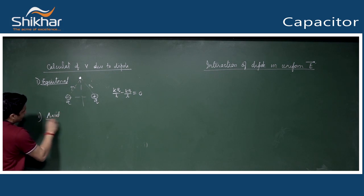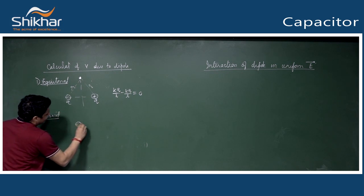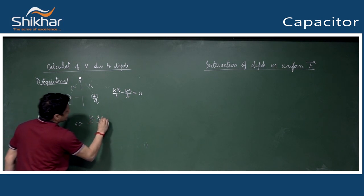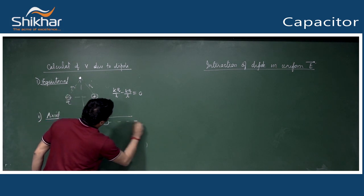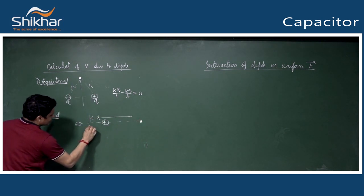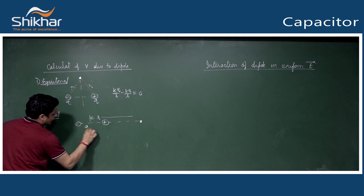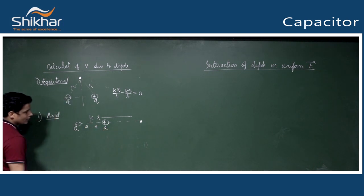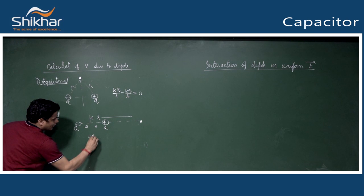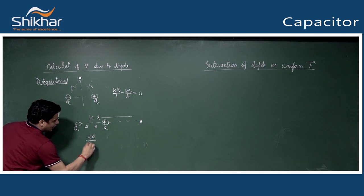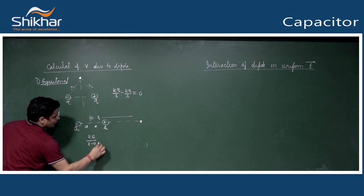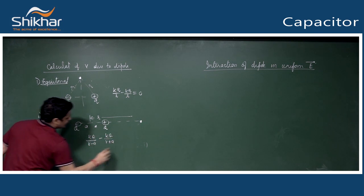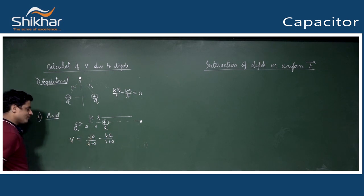On the axial line: minus is here, plus is here. At distance r, the separation is 2a, with charges +q and -q. Potential due to plus charge is kq/(r-a), and due to minus charge is -kq/(r+a). This gives the potential at that point.